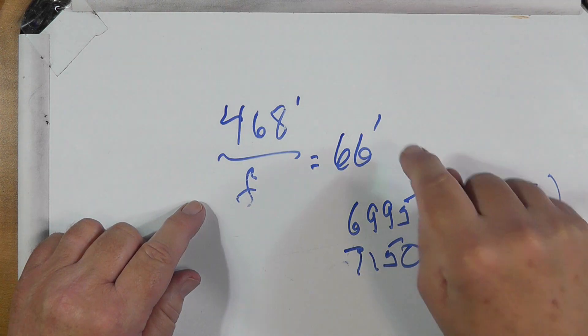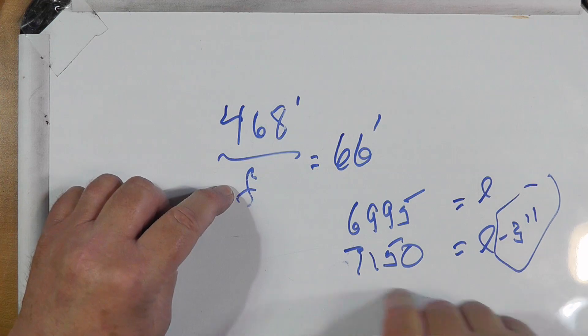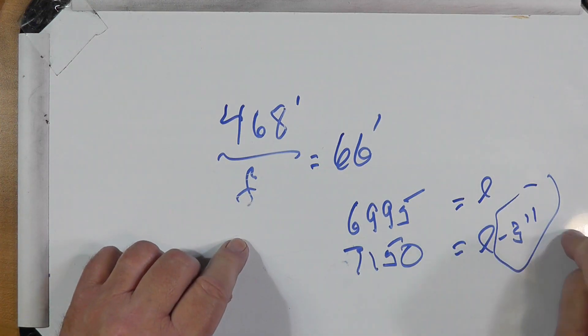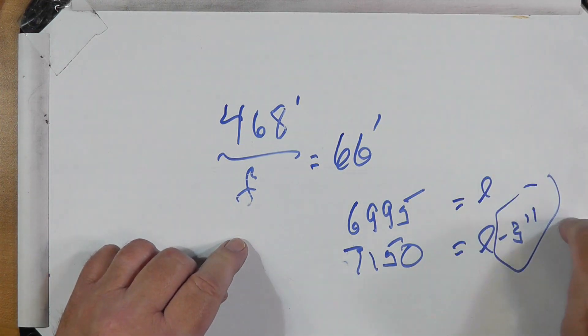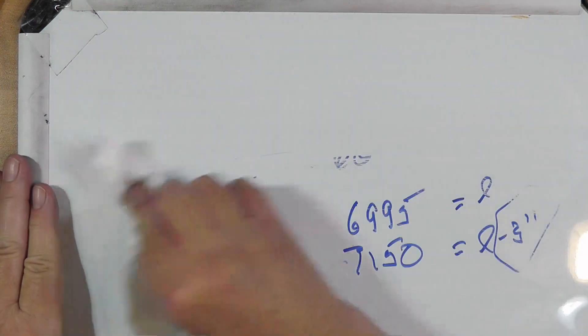If 6995 gives you 66 feet, then put in 7150, it'll give you a somewhat shorter length. And the difference between those two lengths is the amount you need to adjust the antenna. So there you have it. And I hope that's helpful.